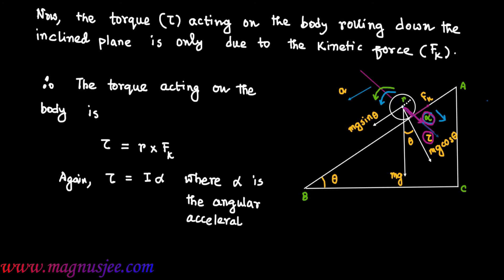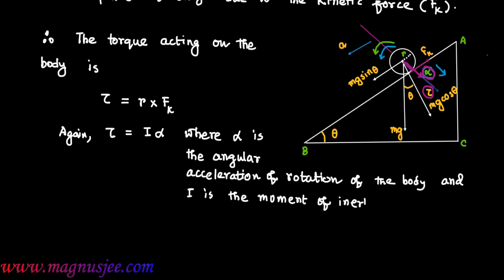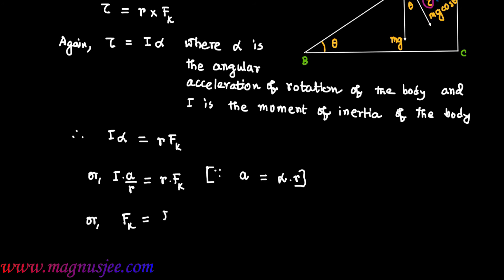The torque acting on the body is tau = r times Fk, since torque is the product of the radius and the kinetic friction. Also, tau = I times alpha, where alpha is the angular acceleration of rotation and I is the moment of inertia of the body about its own axis. Since linear acceleration a = alpha times r, we get Fk = Ia divided by r squared, which is equation 2.